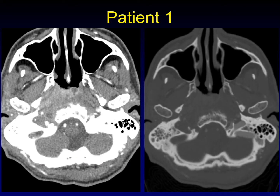This is patient one — an elderly man with a headache. You can see that there's a lot of fullness here just below the central skull base. And if you look at the bone window, there's a lot of erosions along the anterior clivus. This nice cortical rim has been disrupted.